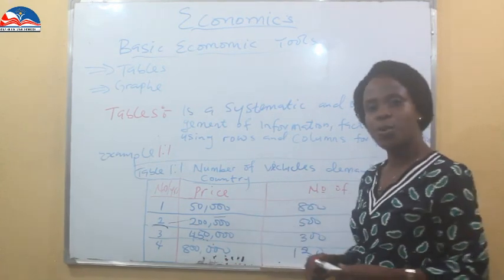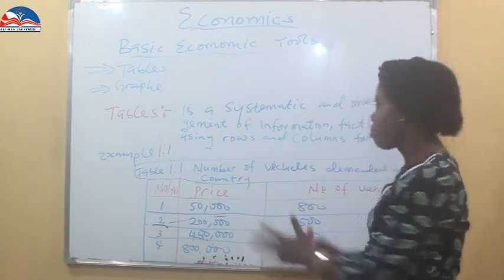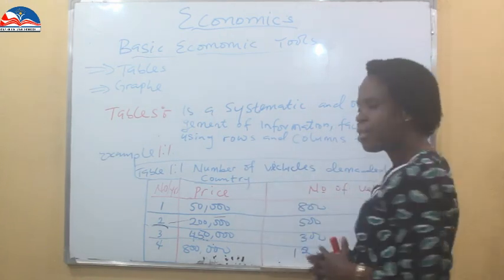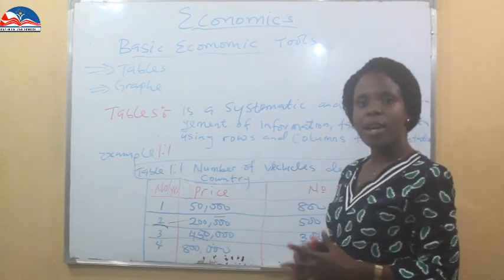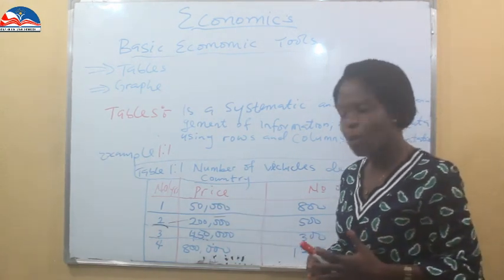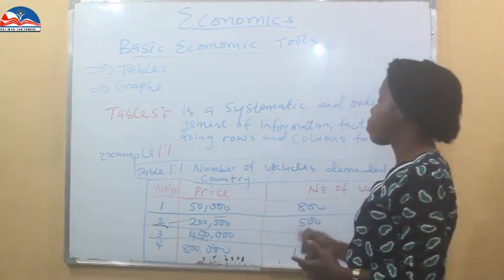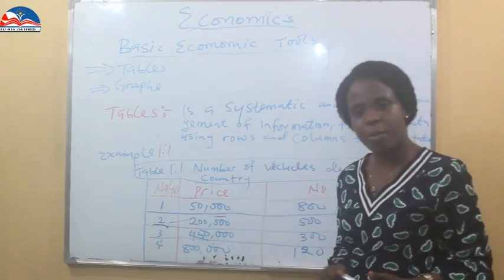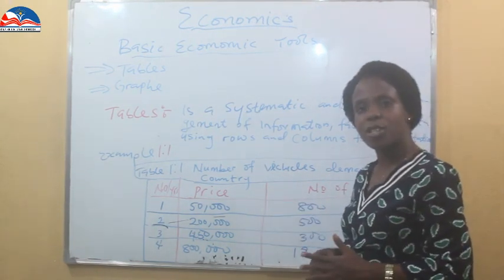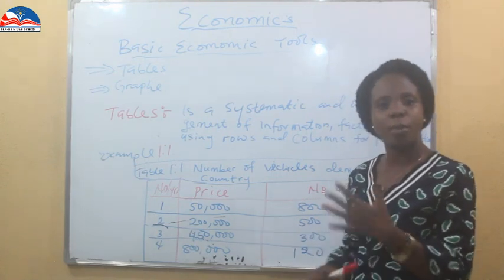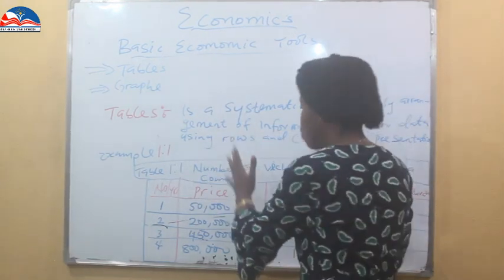If I give you this table to analyze, what would you say? You can see that the more the price increases, the fewer individuals demand the product. So if you have to analyze this table as an economist and you are asked at what price are people buying these cars most, you will say that when the car was at its lowest price of $50,000, 800 people purchased it — so the lower the price, the higher the demand. That's how you explain this table. Tables give us a clear representation of data and help us to analyze very easily.